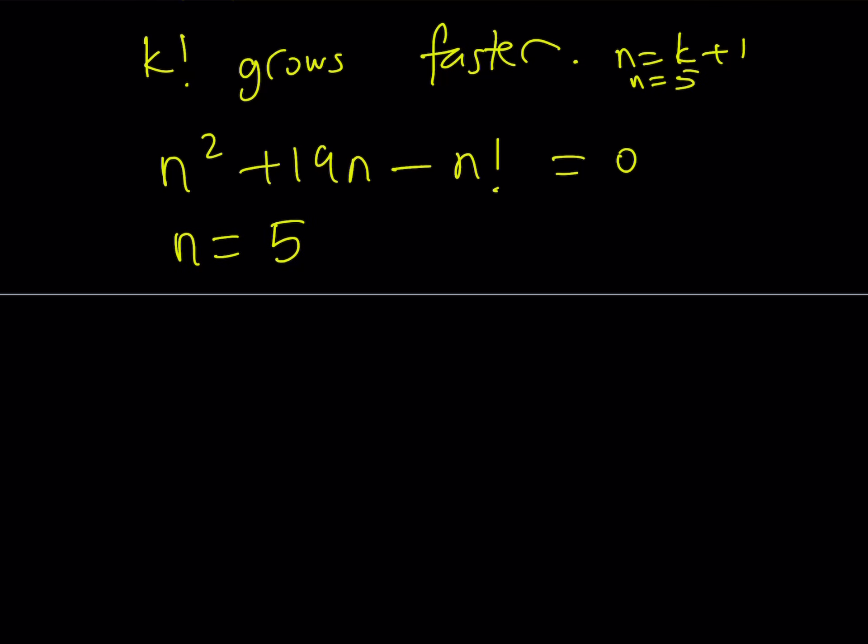And you can easily check that. If you replace n with 5, you're going to be getting 5 squared plus 19 times 5 minus 5 factorial. Let's see what that becomes. 25, 19 times 5 equals 95.